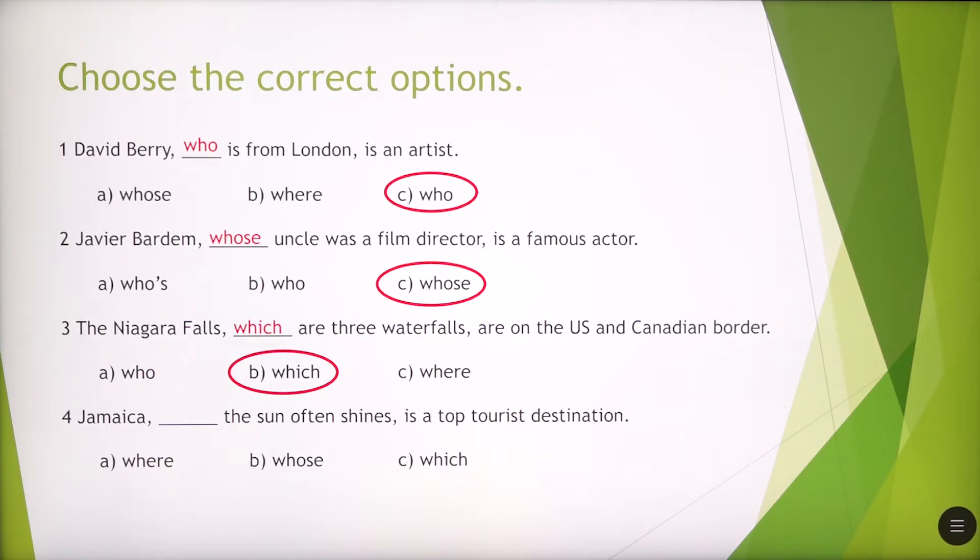And the last one, we've got Jamaica. Is it A, B, or C? It's A. Jamaica, where the sun often shines, is a top tourist destination.